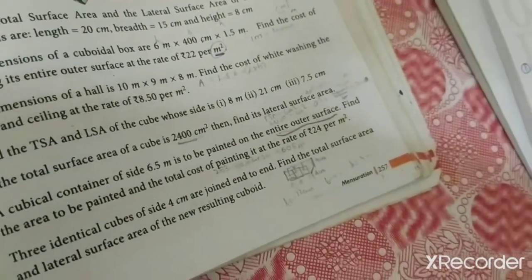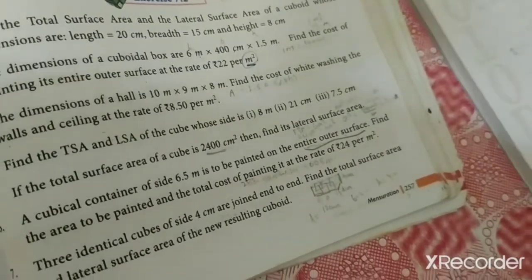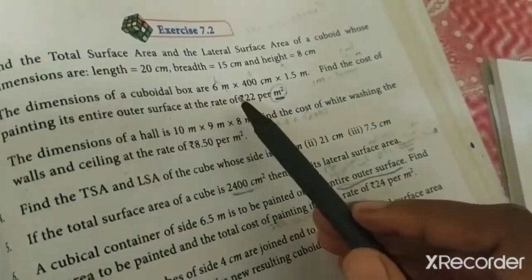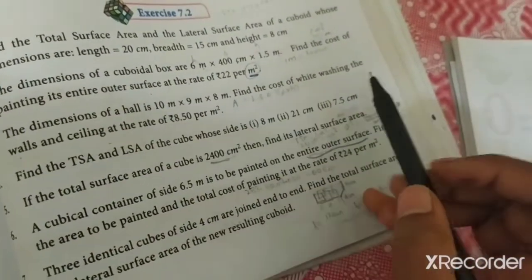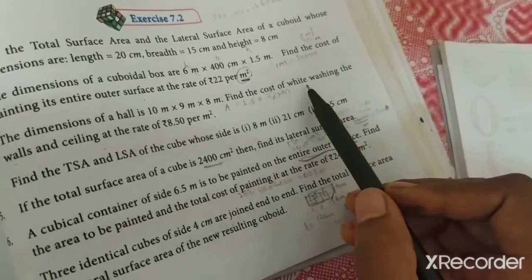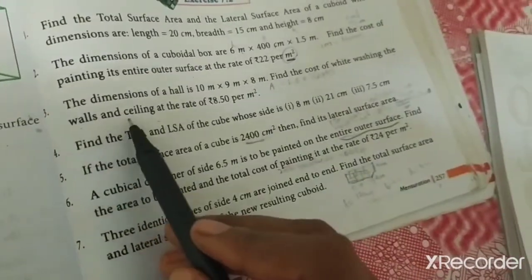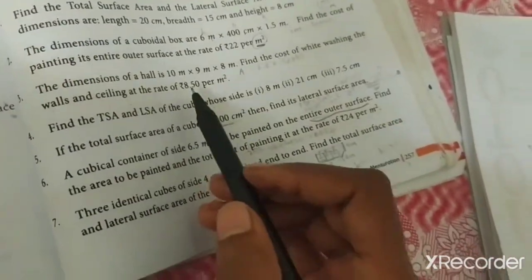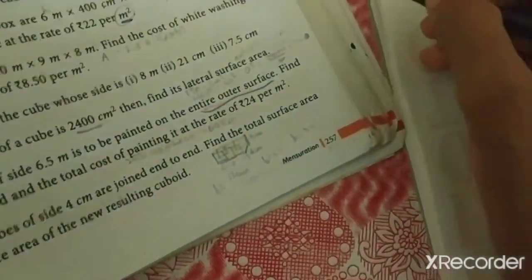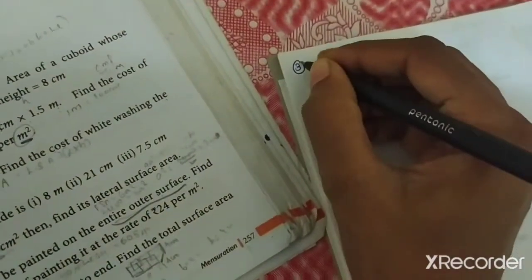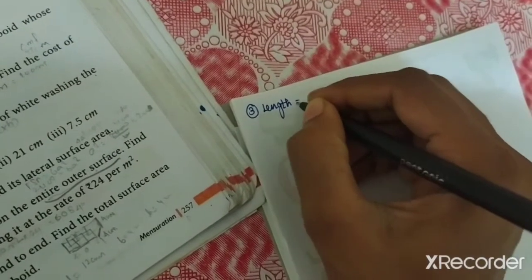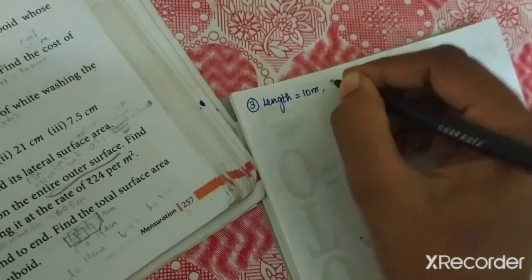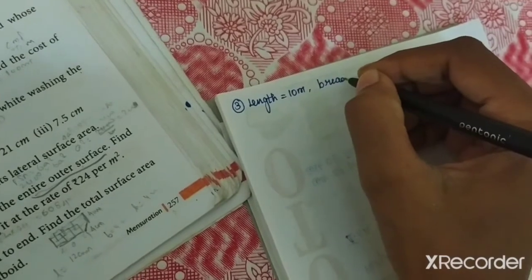Lateral surface area means 2 into L plus B into H. So this is noted. Top and bottom area in your cuboid is independent of height. The total area of the top and bottom is 2 LB. So LSA is obtained by removing 2 LB. If you are adding this 2 LB, that is TSA. That is how we told you.